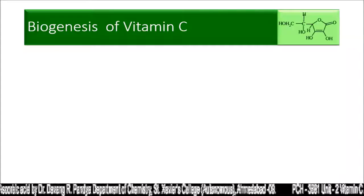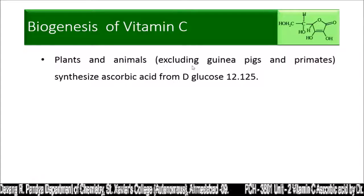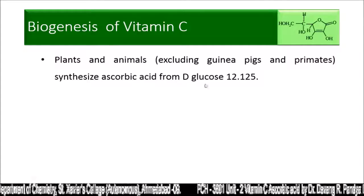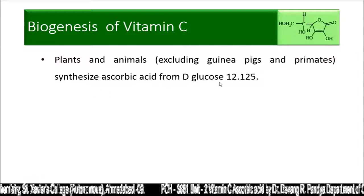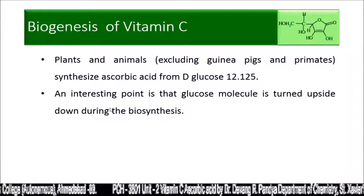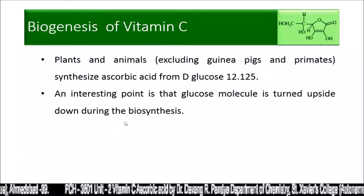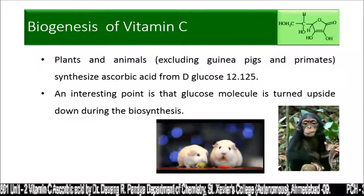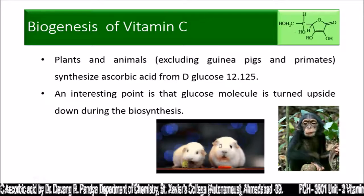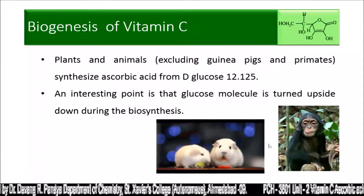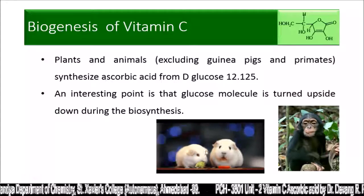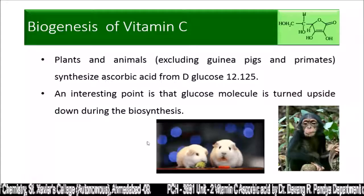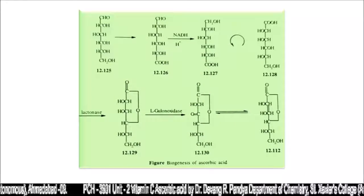Biogenesis of vitamin C: plants and animals, excluding guinea pigs and primates, synthesize ascorbic acid from D-glucose. An interesting point is that the glucose molecule is turned upside down during biosynthesis. Guinea pigs and primates do not have the capacity to synthesize ascorbic acid from D-glucose, but every other animal and plant has that ability.